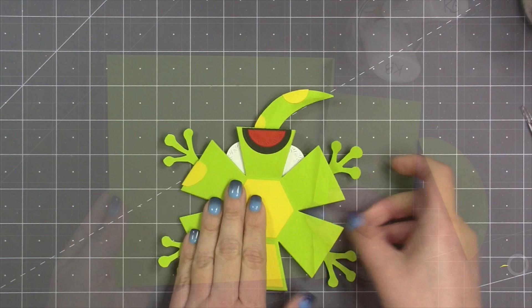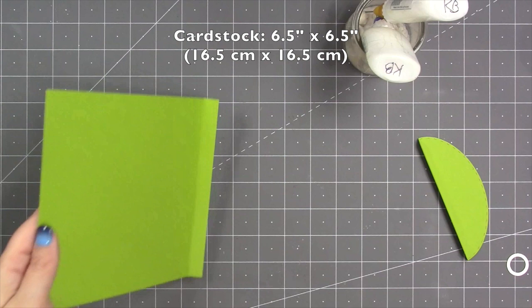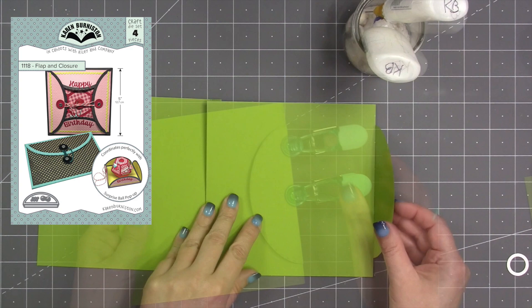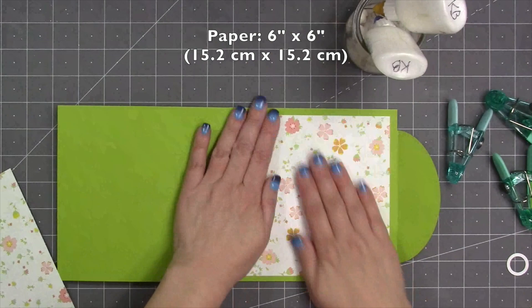For the card, I started with a piece of cardstock that was seven inches by six and a half, scored at six and a half, and then a six and a half inch square. Then I'm using one of the stitched flaps from the flap and closure die set. I glued the tabs to the back of the big square, and that then creates the six and a half inch square card with a side flap closure.